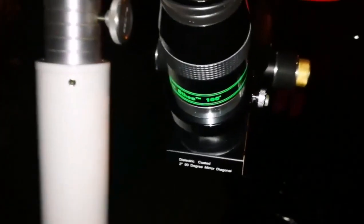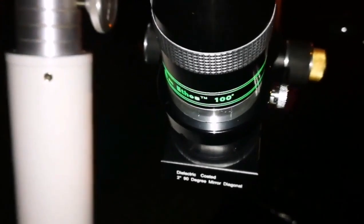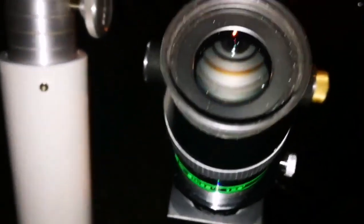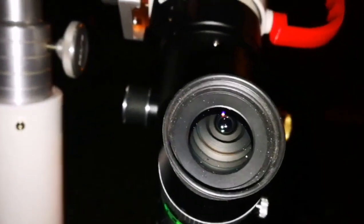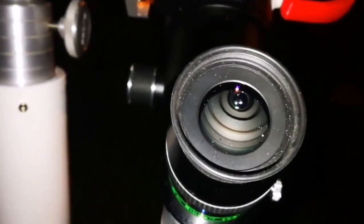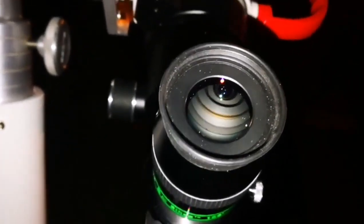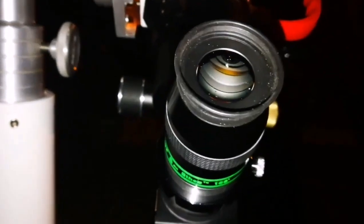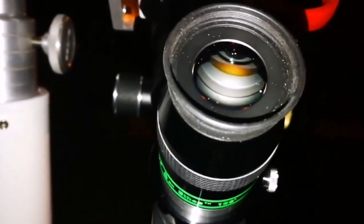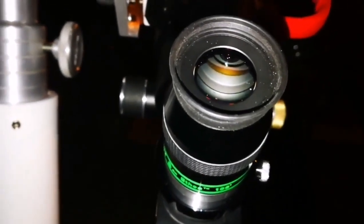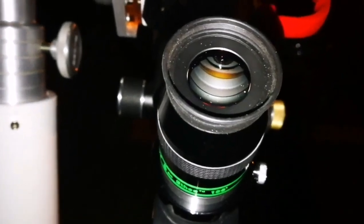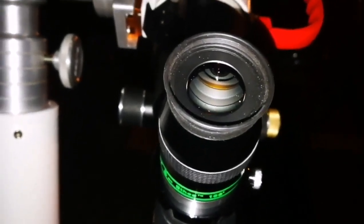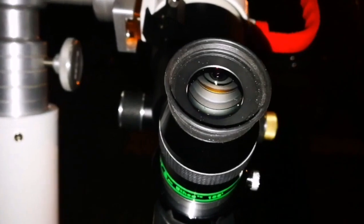And now I'm using the Televue Ethos 8 millimeter 100 degrees. And the clouds and this light pollution is not on my side, so I'm not seeing any individual stars, just a patch of the bright patch of the cluster. Looks bigger compared to the Nirvana 82 degrees.